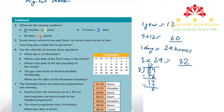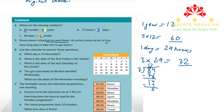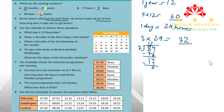We are done with question four. Let's move to question five. It says: Bruno leaves school at 10 past three and arrives home at 10 to four. How long does it take him to get home?